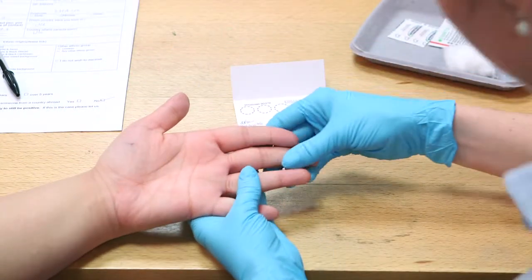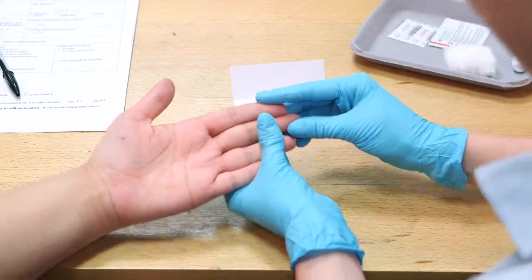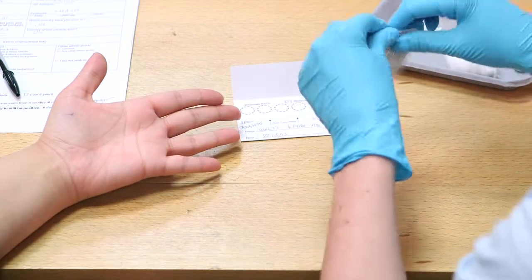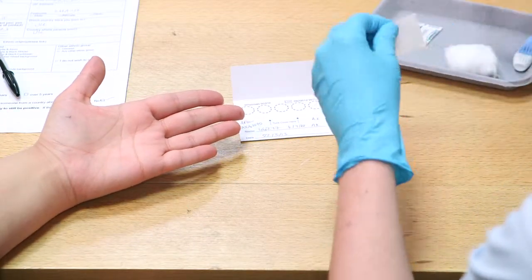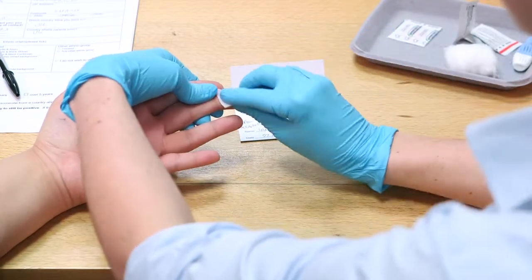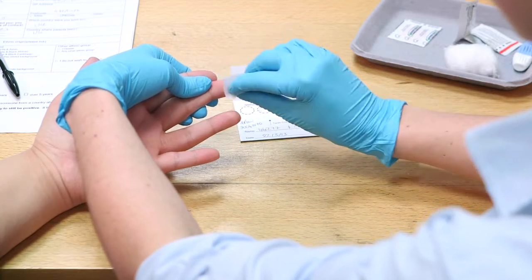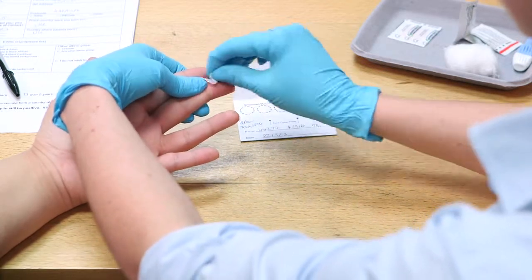Select an appropriate finger. We tend to use the index, middle, or ring finger. Then, clean the selected finger with a Sturette wipe. Allow 30 seconds for this to dry.